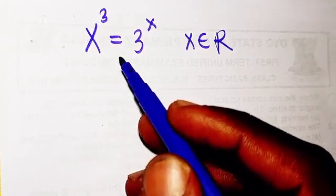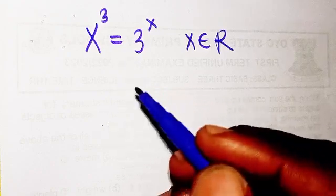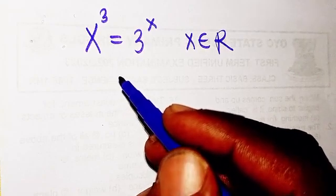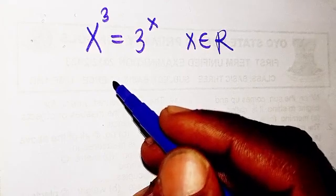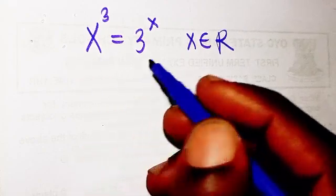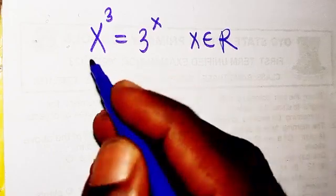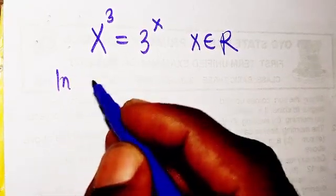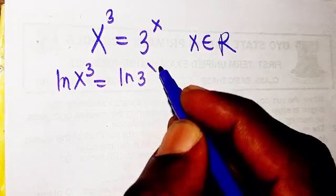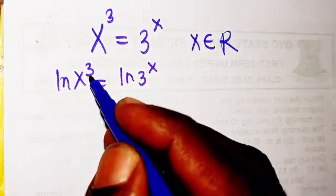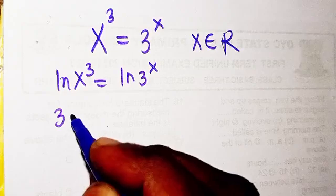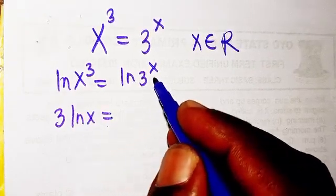Obviously we can see that x equals 3 is a solution, but we need to prove it. We introduce the natural log to both sides of the equation, giving ln(x³) = ln(3ˣ). The exponents come down: 3·ln(x) = x·ln(3).